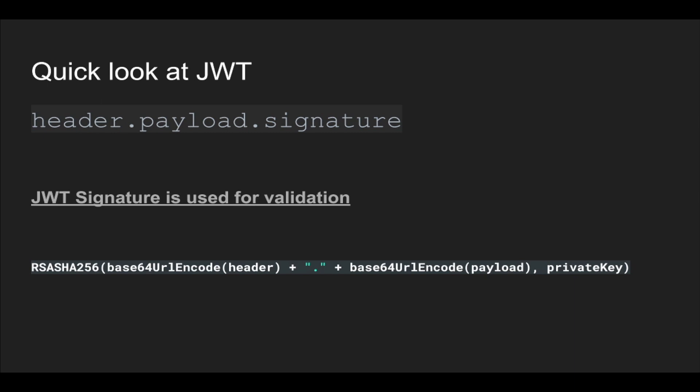Looking at the JWT again, the signature is the last part. A signature is created using a private key. When you have the JWT we'll see how we grab the public keys, but assuming that you have a public key, since you have the data and you also have the signature, you can verify the data and the signature using the public key.